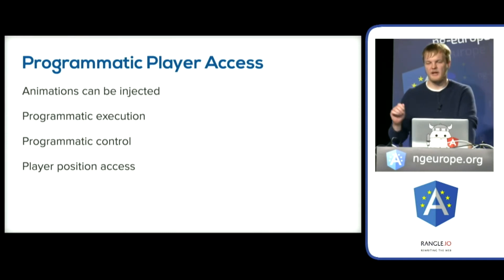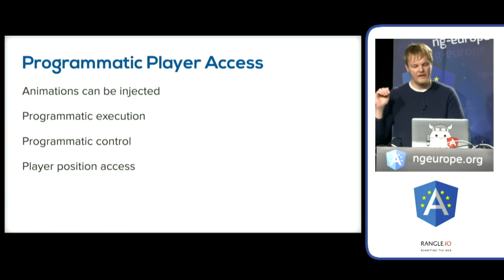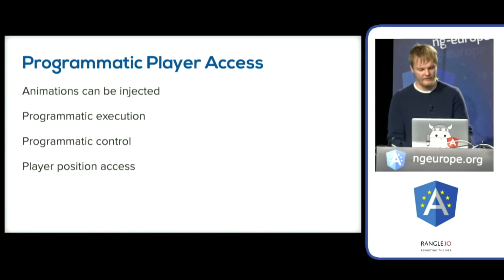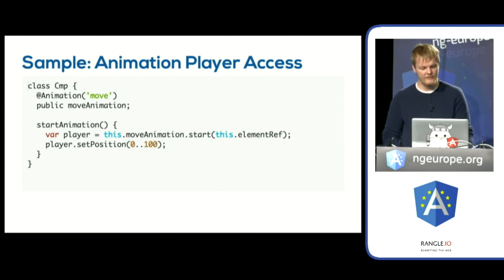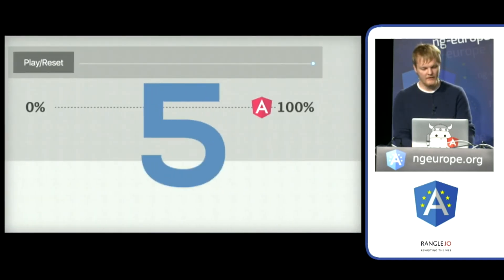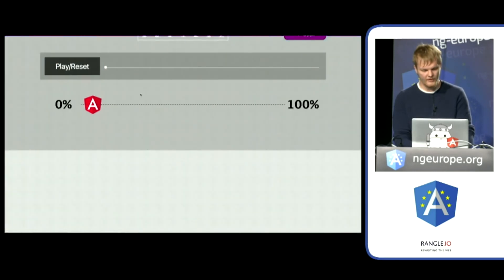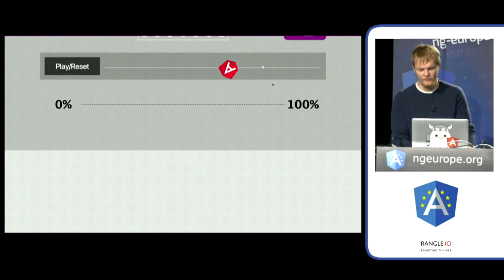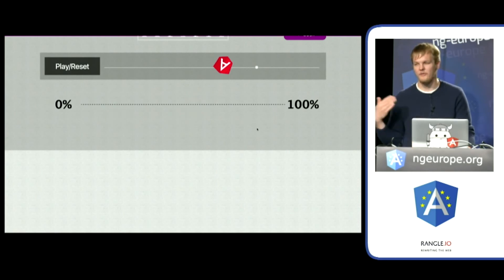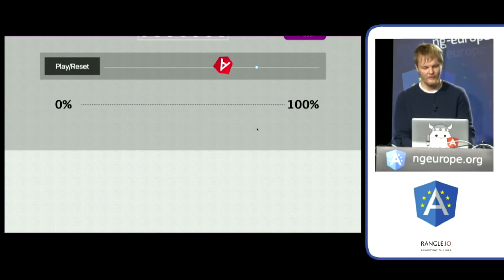Programmatic player access means I can ask for an animation in my component, get hold of the player, and set the player to a position, reverse, pause, or resume the animation as I see fit. If a component injects the animation and I pass in the element ref, I have access to the player and can do all kinds of cool things. Demo five showcases this with an Angular emblem jumping across the page — you can control it frame by frame. Because all this code is defined with the animation DSL, query, CSS parser support, and all new features will work with programmatic player access too.